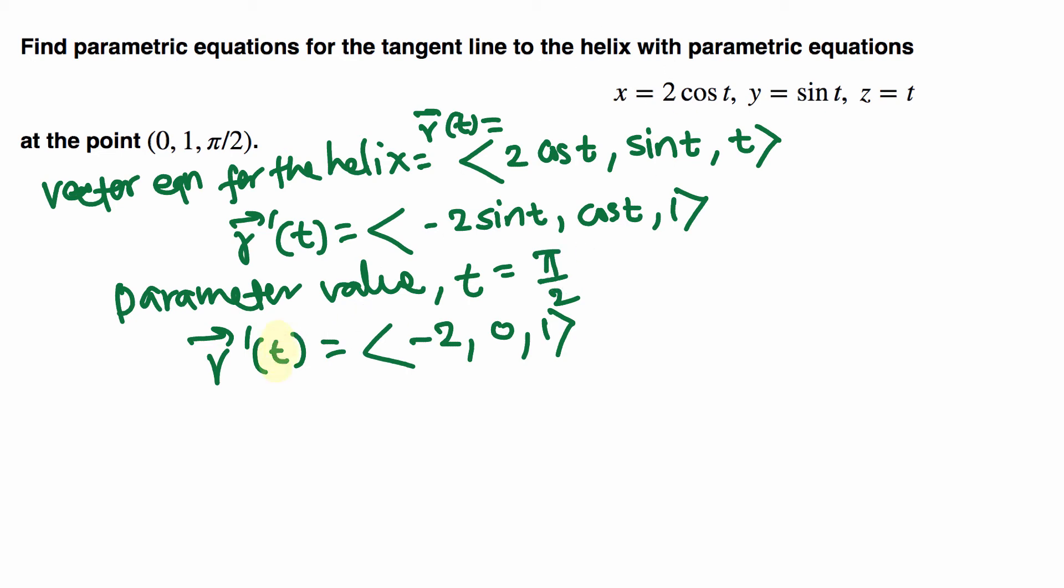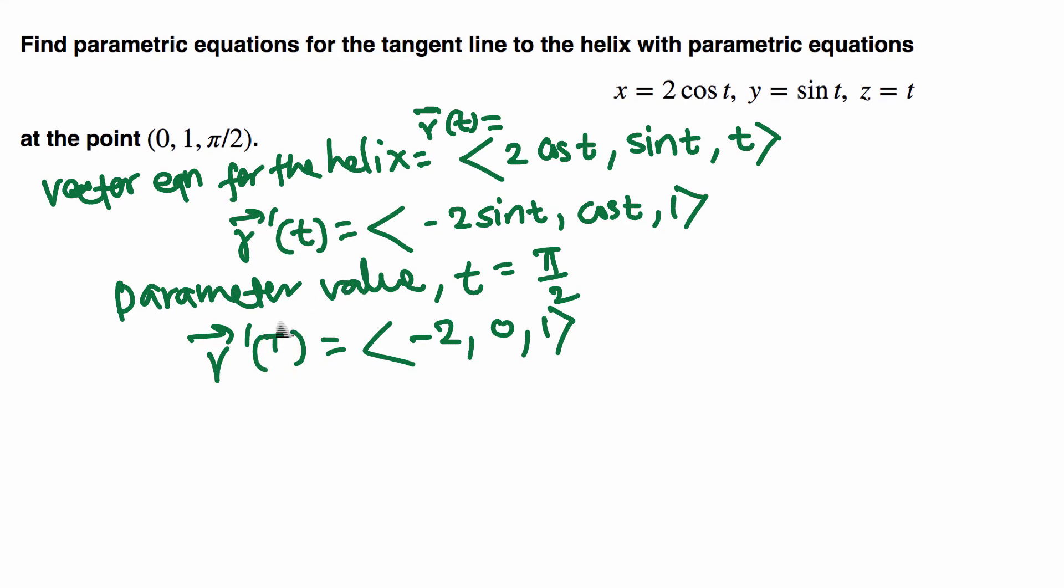This vector is parallel to the tangent line and that is same as direction vector for the line, direction vector ⟨A, B, C⟩. This ABC.